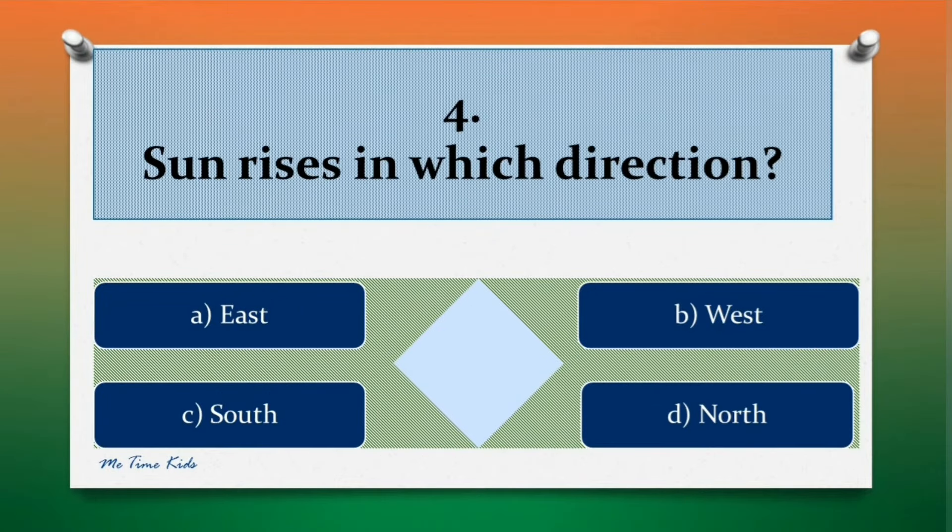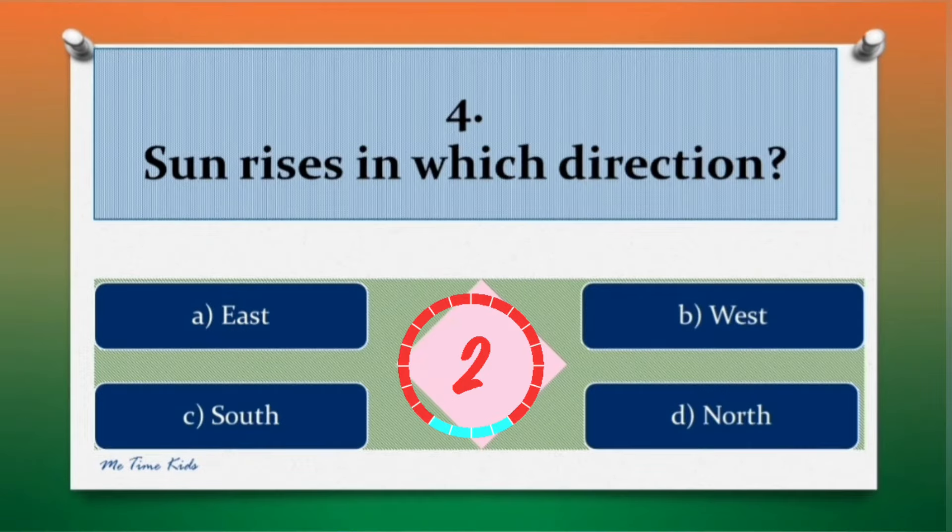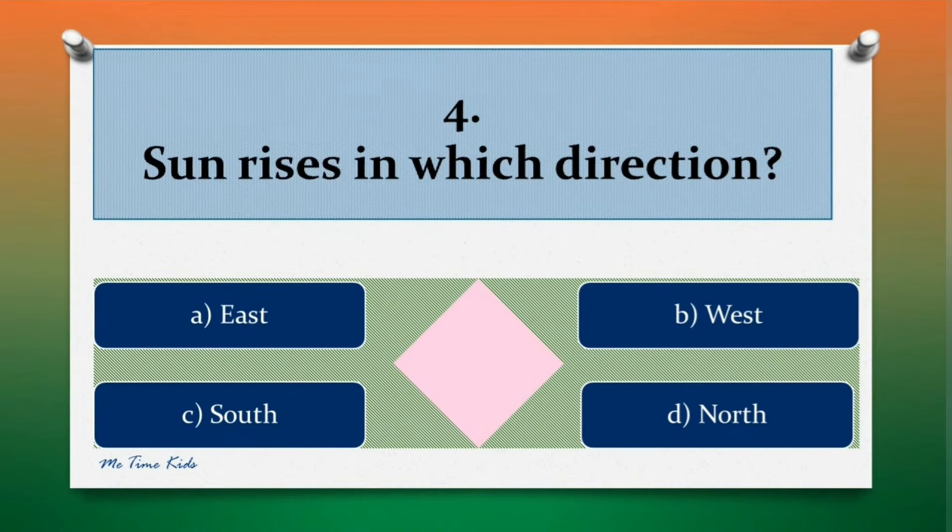Question 4. Sun rises in which direction? Options are: a. East, b. West, c. South, d. North. Correct answer is a. East.